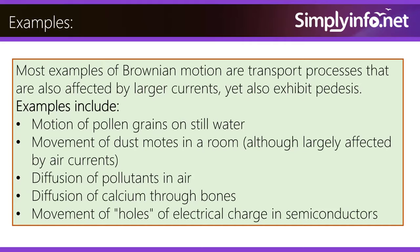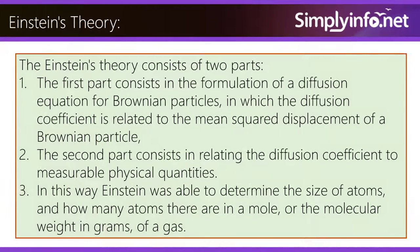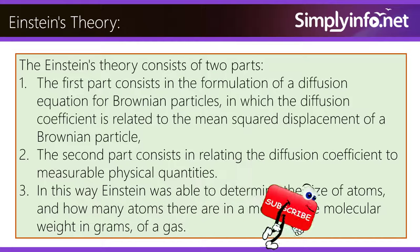Einstein's theory consists of two parts. The first part involves the formulation of a diffusion equation for Brownian particles, in which the diffusion coefficient is related to the mean squared displacement of a Brownian particle. The second part consists of relating the diffusion coefficient to measurable physical quantities. In this way, Einstein was able to determine the size of atoms and how many atoms there are in a mole, or the molecular weight in grams of a gas.